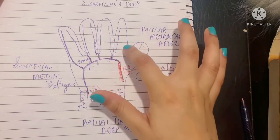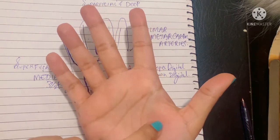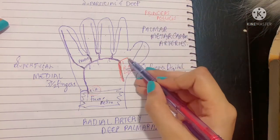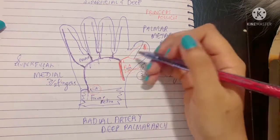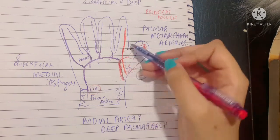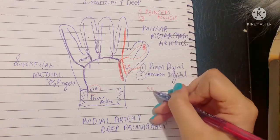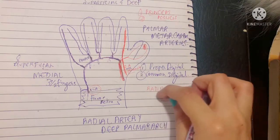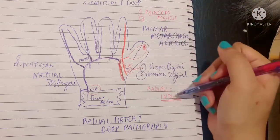There was no supply to the thumb and the lateral part of the index finger from the dorsum, and now that is the job for the radial artery in the palm. It gives two branches: first, the princeps pollicis artery — pollicis being the anatomical name for the thumb — which completely supplies the thumb. Then it gives the radialis indicis artery, which supplies the lateral border of the index finger.